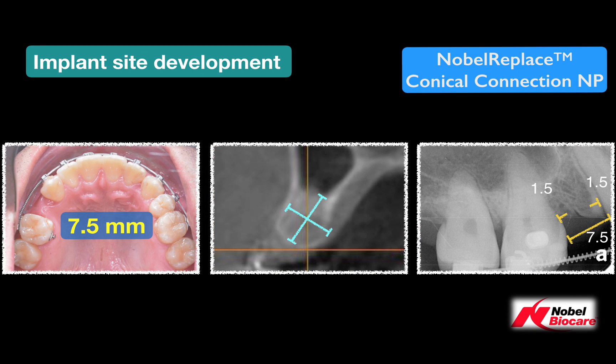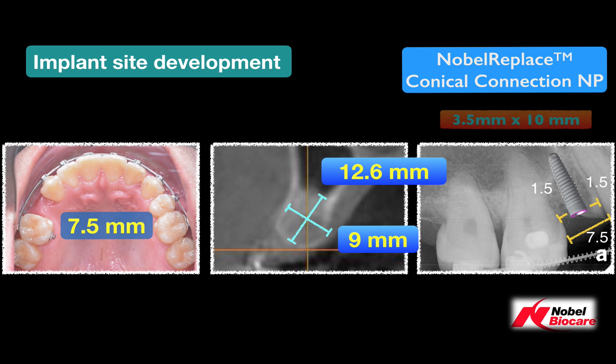Most of the treatment was completed. Then we took a cone-beam CT to examine the bone volume. Then the size of the implant — 3.5 x 10 mm — was selected.